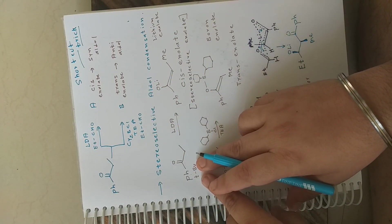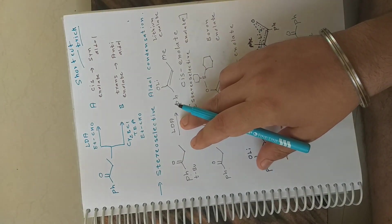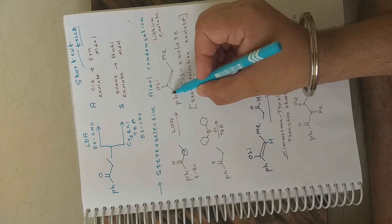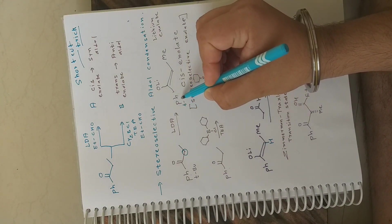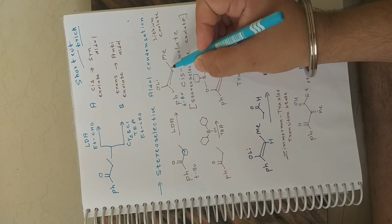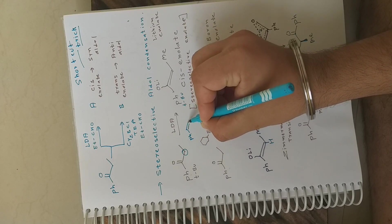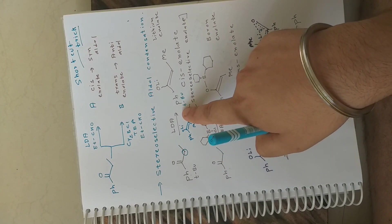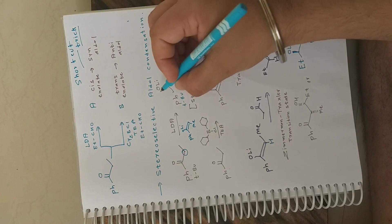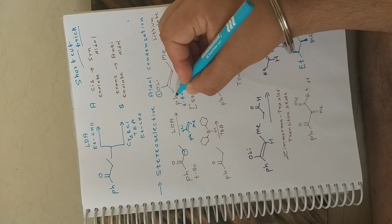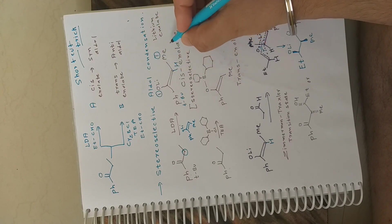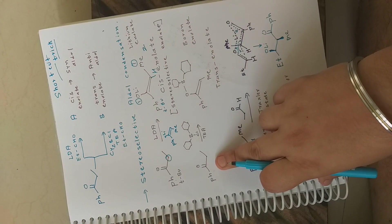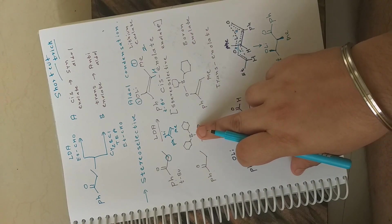The starting material is phenyl ethyl ketone. When treated with LDA, the acidic proton is removed and a cis enolate forms. When the group is bulky like phenyl or tert-butyl, methyl cannot accommodate near it due to repulsion, so methyl goes to the opposite side. This gives the cis (Z) enolate — both terms refer to the same thing.